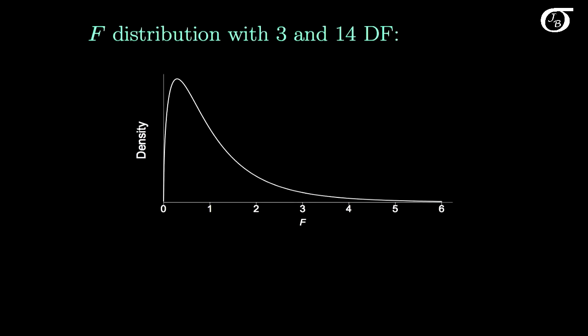The other type of problem that we frequently encounter is finding quantiles or percentiles for the F distribution. So we might want to find, let's say, the value of F over here that has an area to the right of 0.025.